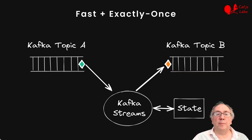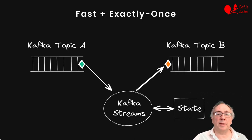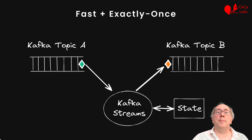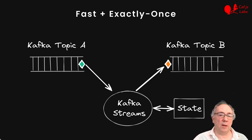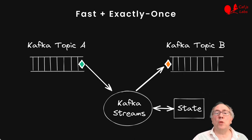Many large companies today use Apache Kafka to handle streams of events in real time. They can use the Kafka Streams API to build applications that read messages from one topic, process them, and write new events to a different one. The great thing about Kafka is that we can do that fast and with exactly-once semantics, so even if a server crashes, we will eventually process all the events without creating duplicates.